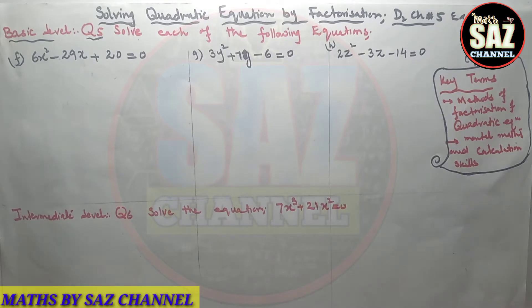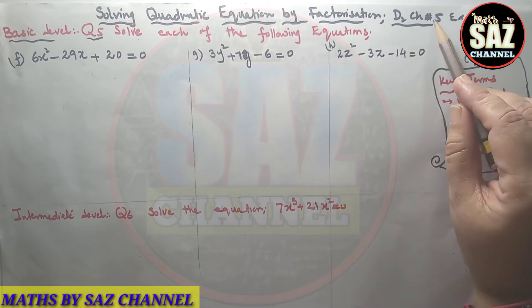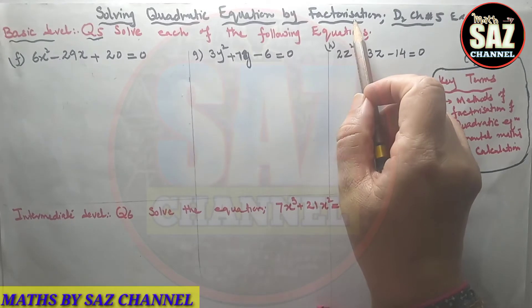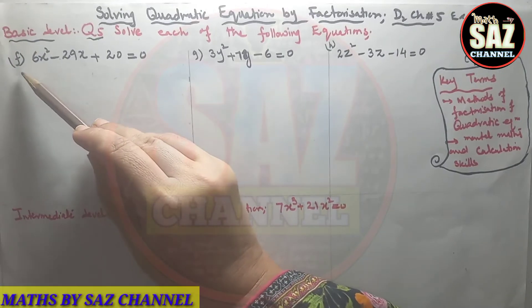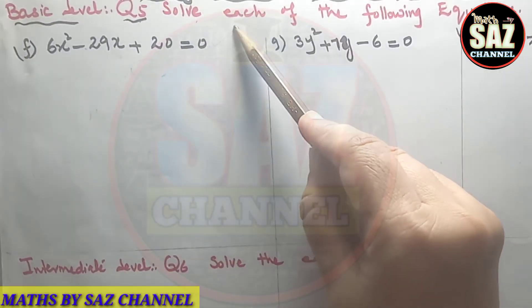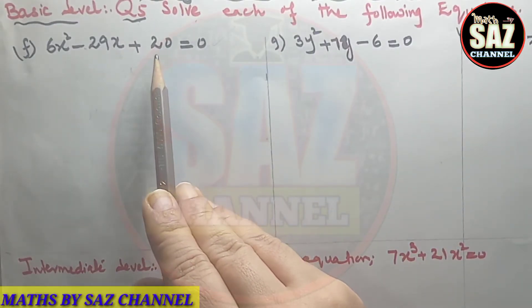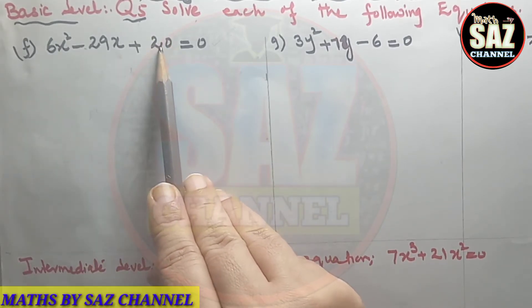Hello and welcome to Maths by Sauce. This is my sixth lesson of D2, Chapter 5, Section 5a, which is about solving quadratic equations by factorization. In this lesson I will solve basic level question number 5 that says: solve each of the following equations. The first part is 6x² - 29x + 20 = 0. We can see the question is in the form of a standard quadratic equation, and the first term and last term are not perfect squares.